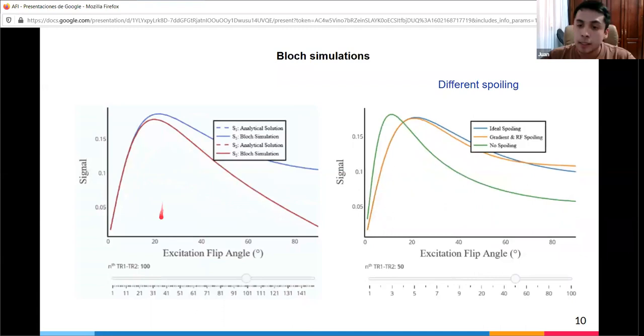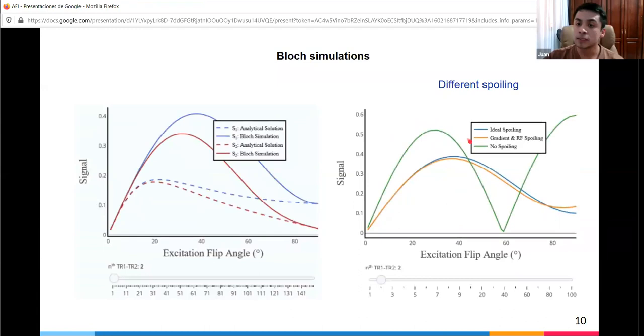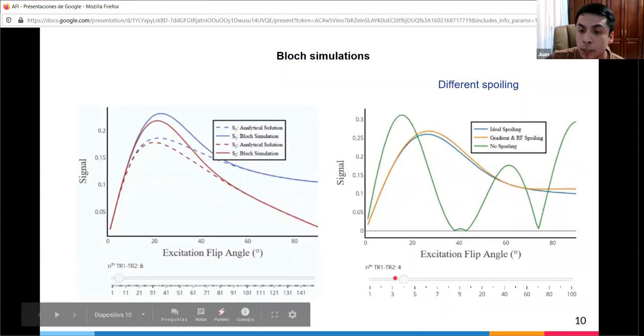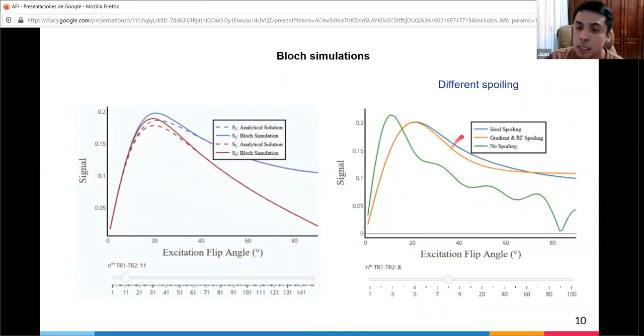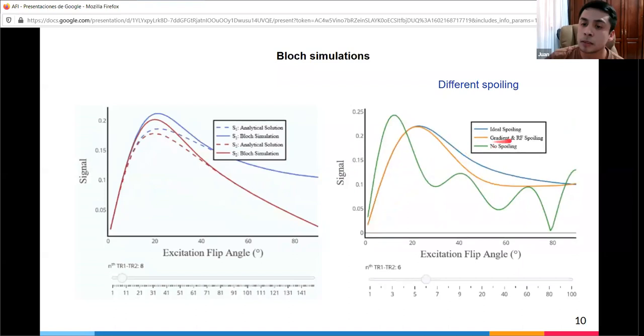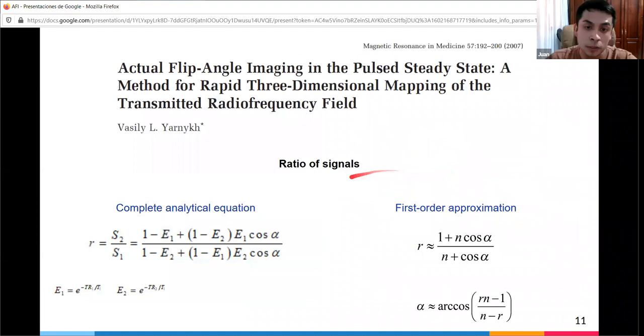Block simulations are useful to see the effect of different spoiling. The right curves correspond to signal 1 only. The blue line is the signal ideally spoiled, the green curve is signal with no spoiling. Between these two curves, even after many repetition times, the signals are very different. There are more similarities between the ideal and when spoiling is applied. This also depends on excitation flip angle. All these equations and plots come from a 2007 paper by Vasily L. Yarnykh.